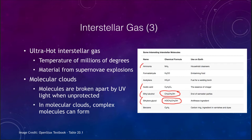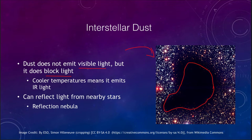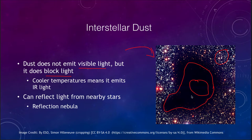Now, as we look at the interstellar medium, the other component is the dust. Interstellar dust is not visible itself — it does not emit visible light — but it does block light. We can see in this image a large dark patch that shows hardly any stars, even though in reality there are just as many stars in that section as elsewhere. The problem is that there is dust in between us and those stars, blocking their light. The dust particles, spread out over so many light years, become visible by the absence of material rather than through its presence.